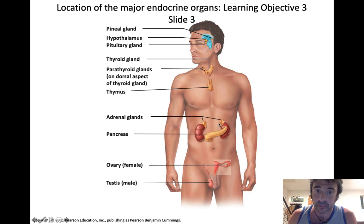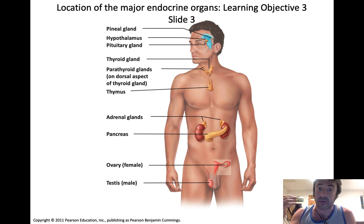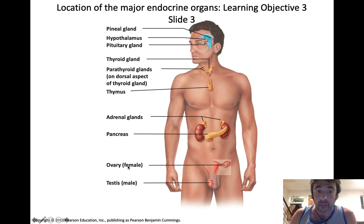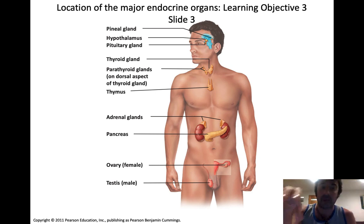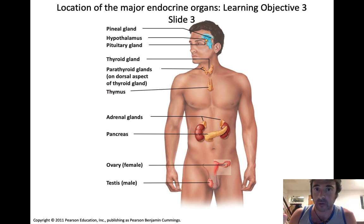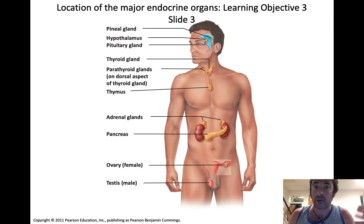The adrenal glands rest on top of the kidneys. The pancreas, which you've read is an organ of the digestive system, is also a really important organ within the endocrine system. Finally, we have the male and female reproductive organs — the ovaries and testes — which we'll talk about separately. Our focus today will be the hypothalamus, pituitary gland, thyroid gland, adrenal glands, and the pancreas. Those are our focal points for labeling on the lab exam and the upcoming lecture exam.